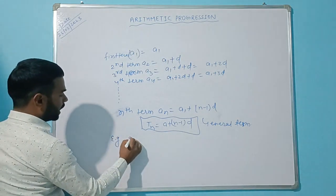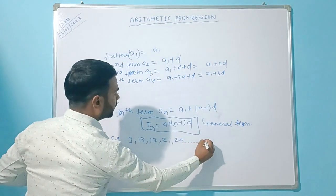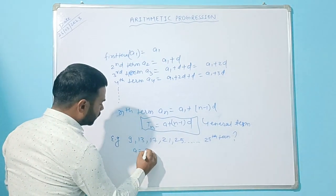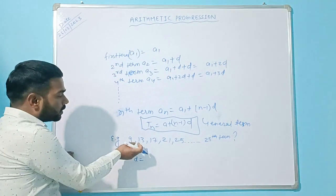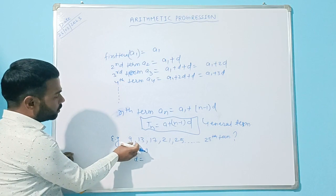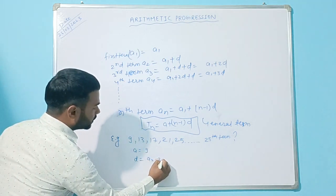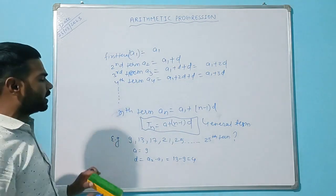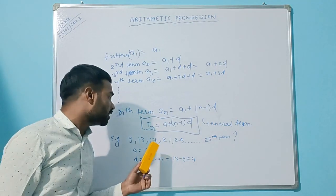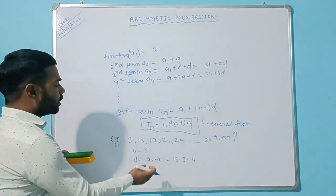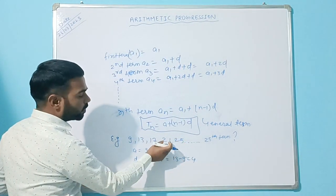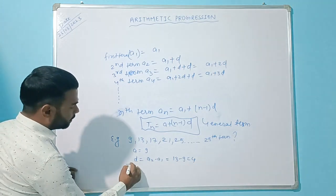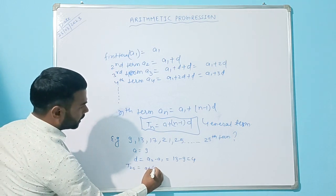Let us apply this to the example 9, 13, 17, 21, 25 and find its 25th term. Here a = 9, and the common difference d = a2 − a1 = 13 − 9 = 4. You can verify: 21 − 17 = 4, 25 − 21 = 4 — the common difference is consistently 4. So a = 9, d = 4, and we need t25.